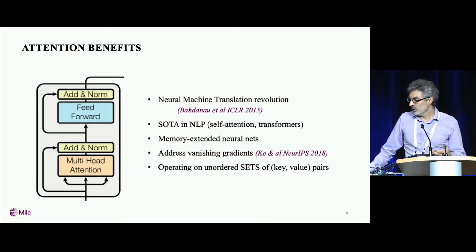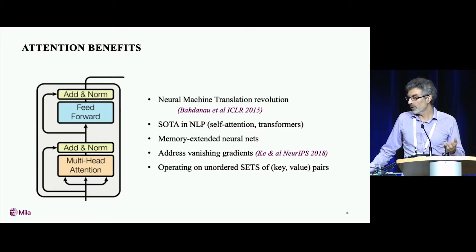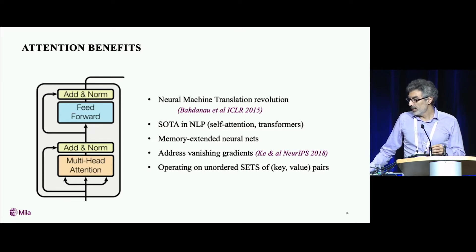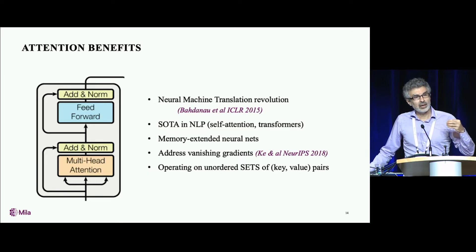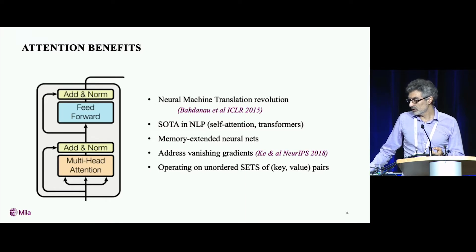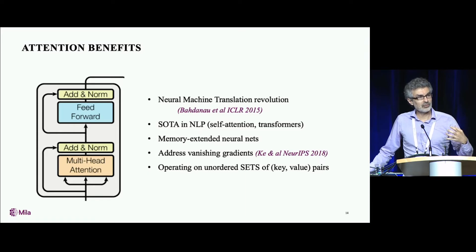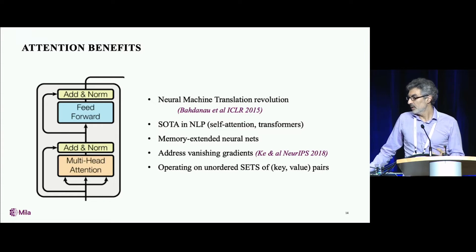I mentioned machine translation, but essentially today's NLP systems — state-of-the-art systems — all rely on attention. Look at all the work based on transformers and their variations. They're also at the heart of memory-extended neural nets. We had a paper last year and more ongoing work on how attention connected to memory can also unlock the problem of vanishing gradients. Attention also allows us to change neural nets from machines that process vectors to machines that process sets, and in particular, sets of key-value pairs.